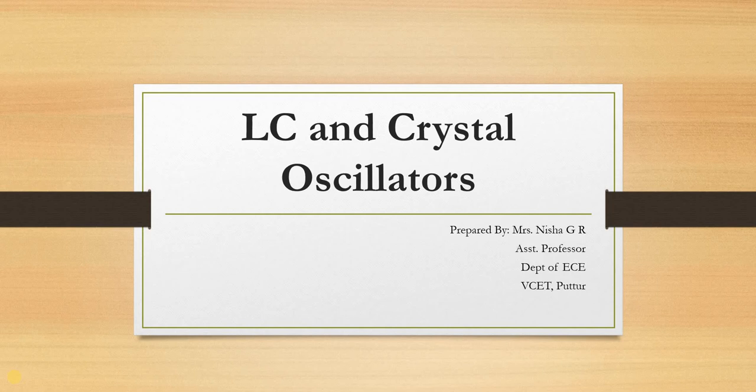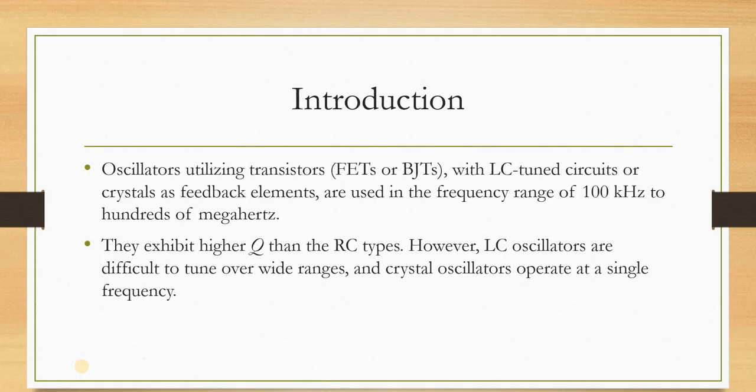The circuit using L and C elements is called a tank circuit or oscillatory circuit, which is an important part of the LC oscillator. This circuit is also referred to as a resonating circuit or tuned circuit. These oscillators are used for a high frequency range from 200 kilohertz to a few gigahertz.